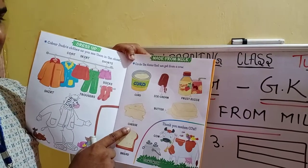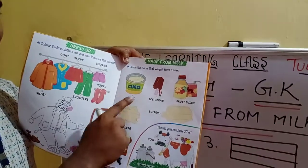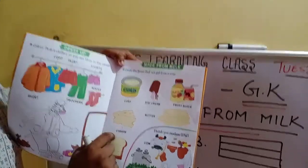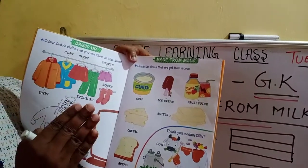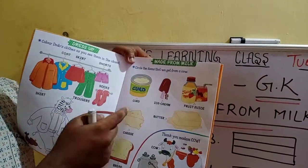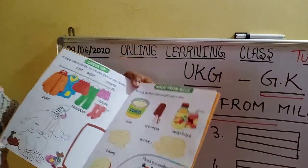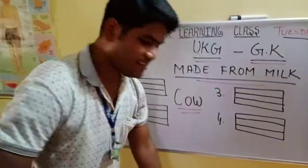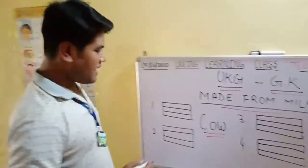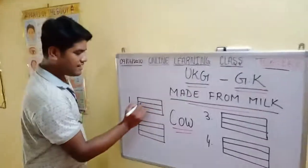You have to learn all the spellings. All are the milk products. Let's learn the spellings once again.